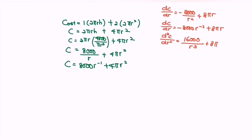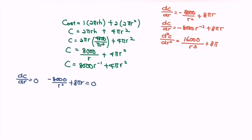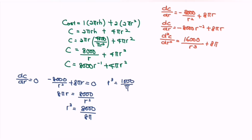To find the critical value, set dC/dr = 0: −8000/r² + 8πr = 0. Rearranging gives 8πr = 8000/r², so r³ = 8000/(8π) = 1000/π. Therefore r = ∛(1000/π) = 10/∛π.